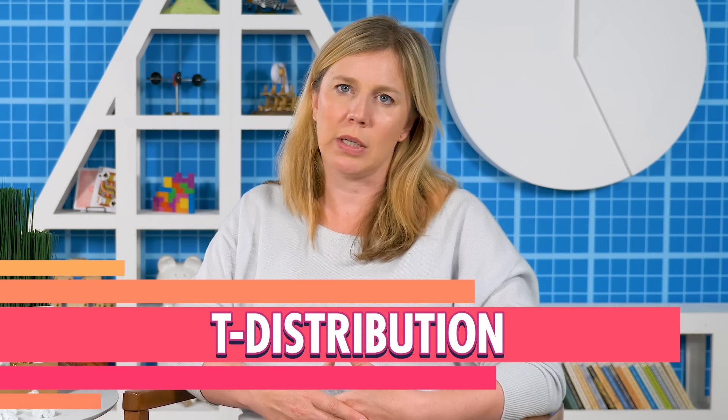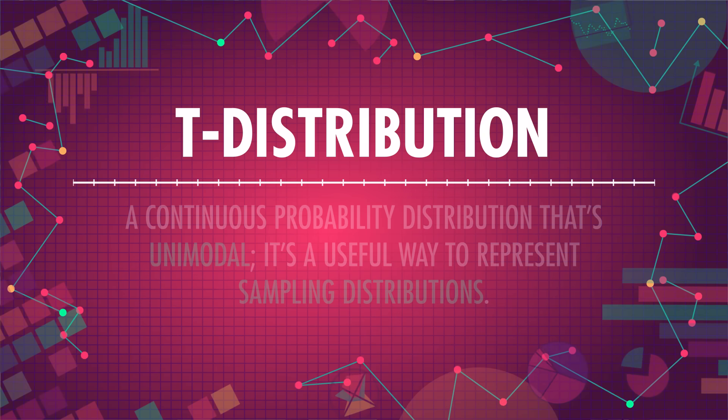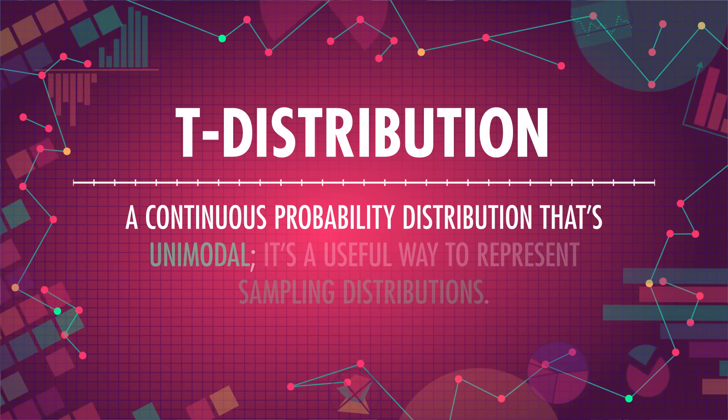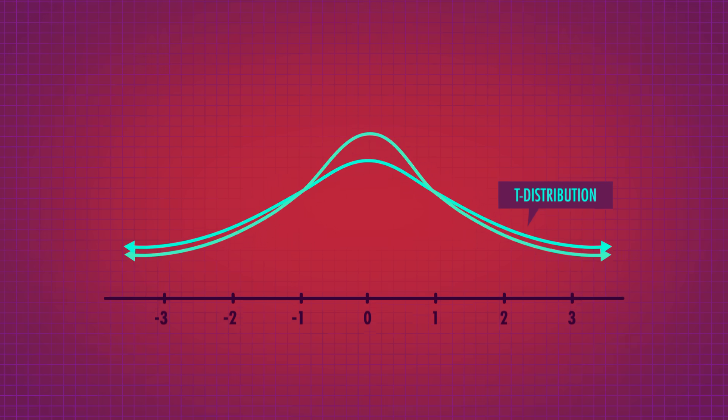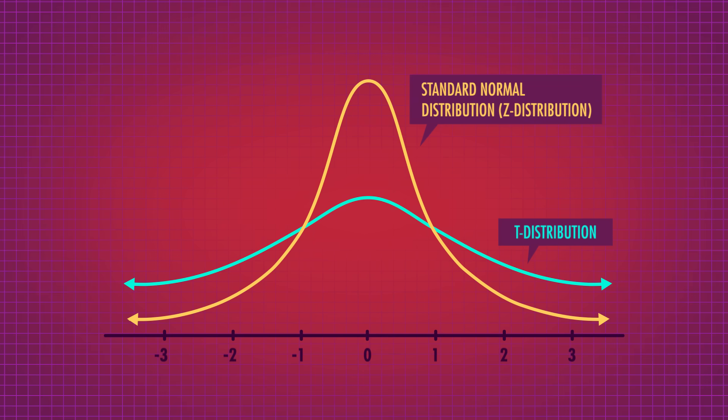We can't always have large samples. It's often the case that there's not enough time or money to collect hundreds of data points. With small sample sizes, the distribution of sample means isn't always exactly normal. So we often use a t-distribution instead of a z-distribution to find the middle 95% of our data. The t-distribution, like the z-distribution, is a continuous probability distribution that's unimodal — it's a useful way to represent sampling distributions. The t-distribution changes its shape according to how much information there is: with small sample sizes, there's less information, so the t-distribution has thicker tails to represent that our estimates are more uncertain. As we get more and more data, the t-distribution becomes identical to the z-distribution.